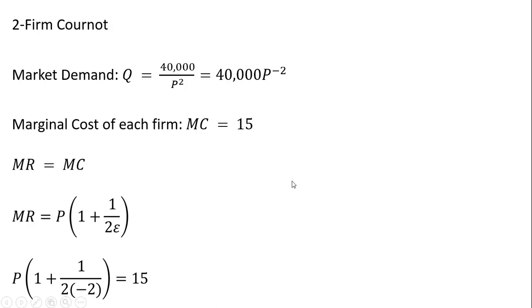I'm going to simplify what's in parentheses. So that's just 1 minus 1 fourth, or 0.25, or 0.75P equals 15. Dividing through by 0.75, the market equilibrium price is $20, 15 divided by 0.75.